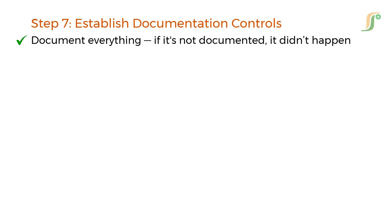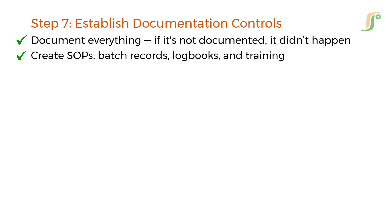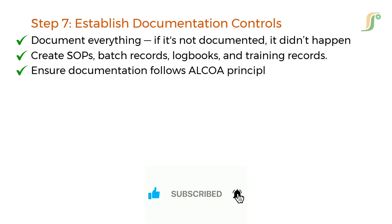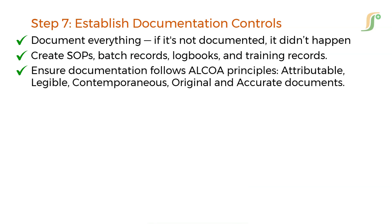Step 7: establish documentation controls. Document everything — if it's not documented, it didn't happen. Create standard operating procedures, batch records, logbooks, and training records. Ensure documentation follows ALCOA principles: Attributable, Legible, Contemporaneous, Original, and Accurate.